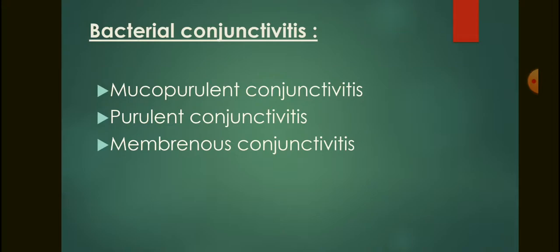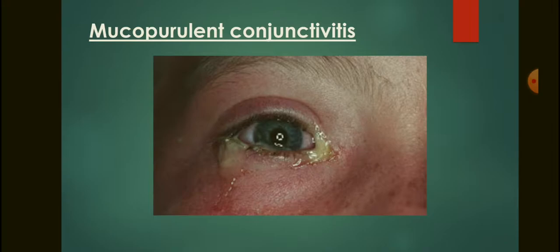Bacterial conjunctivitis is the inflammation of the conjunctiva due to a bacterial infection. Depending on the type of bacteria, there are three types: mucopurulent conjunctivitis, purulent conjunctivitis, and membranous conjunctivitis. Mucopurulent conjunctivitis is the type where there is marked hyperemia and mucopurulent discharge.